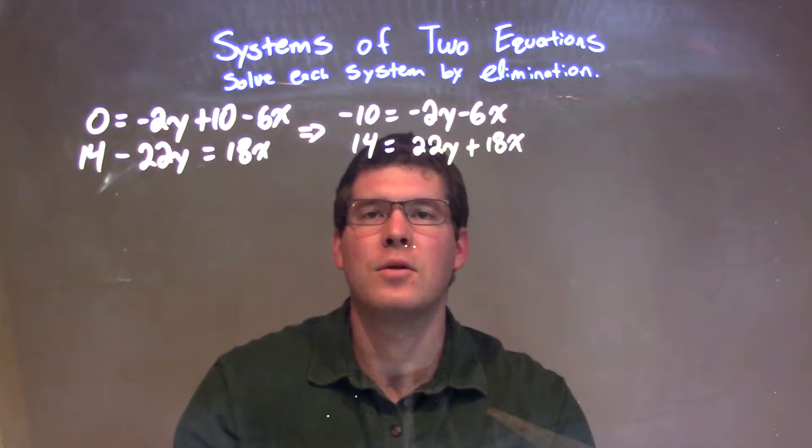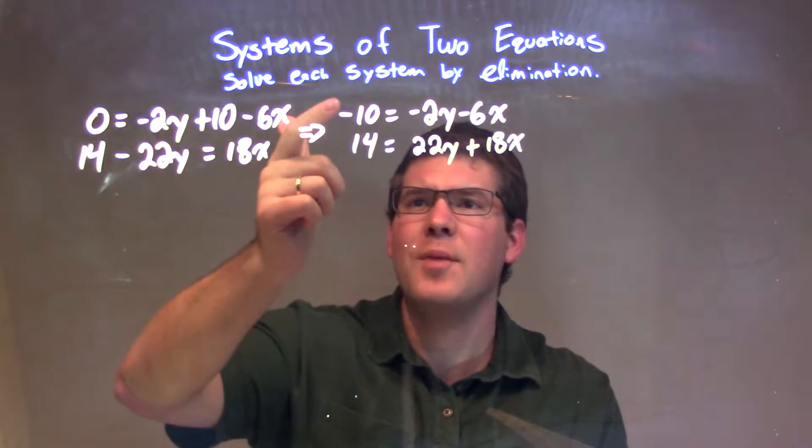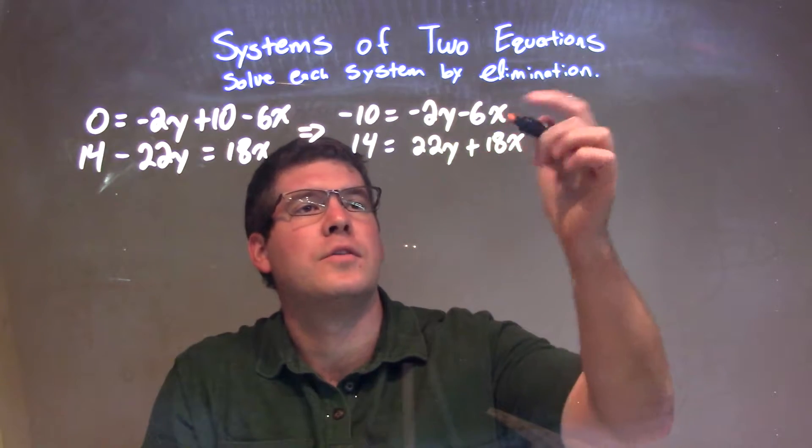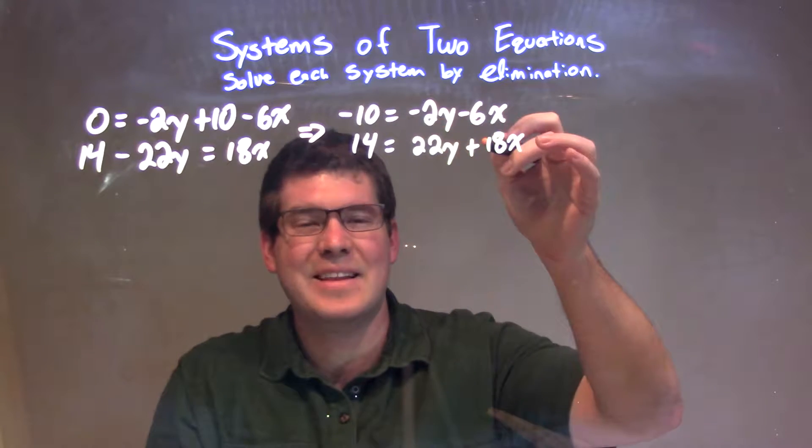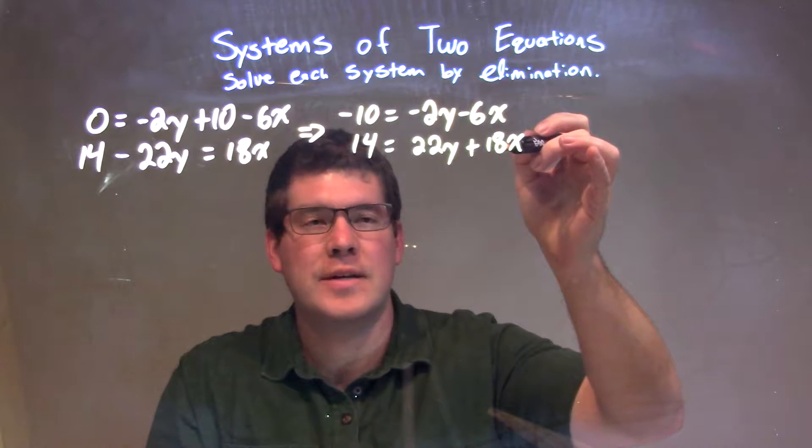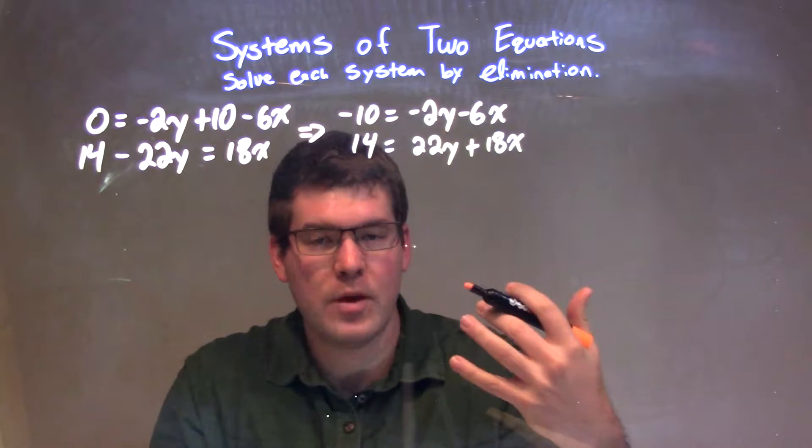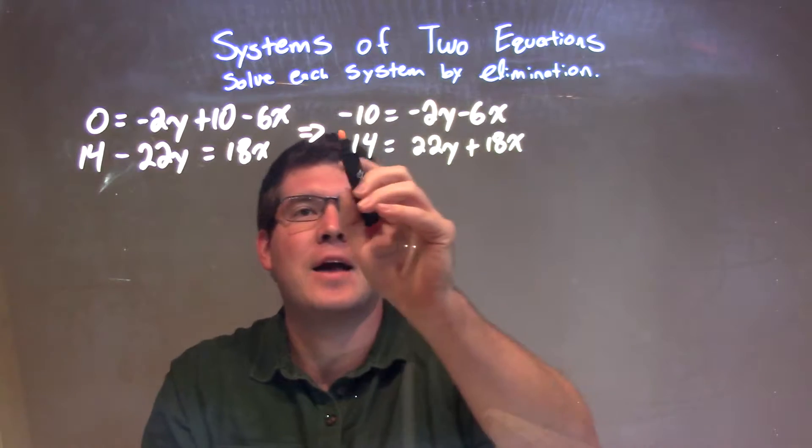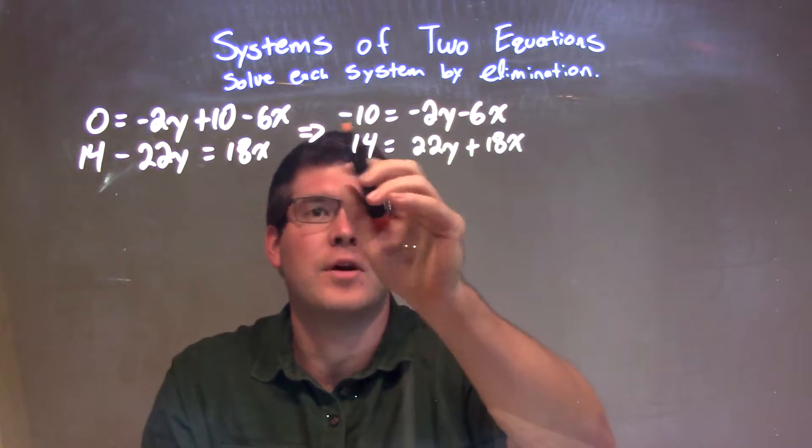Now at this point, I'm going to look at it and say, can I multiply one of these equations or both of them by a number to cause one of the variables to get eliminated, looking at the coefficients. I know that 6 goes into 18 three times. So if I multiply the top equation by 3, we can eliminate the x variable, especially because there's a negative right there on the 6.